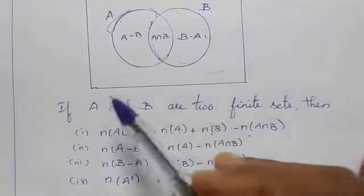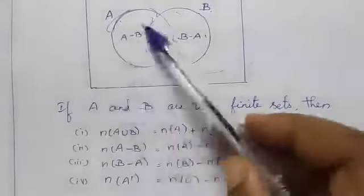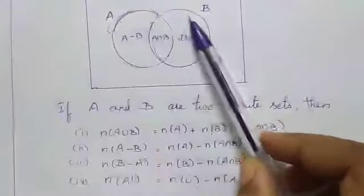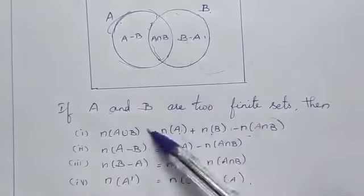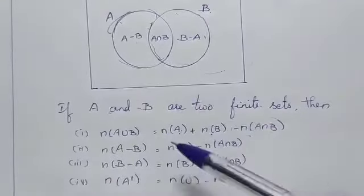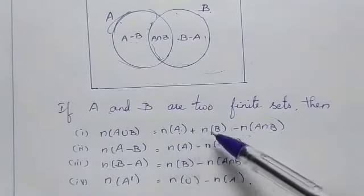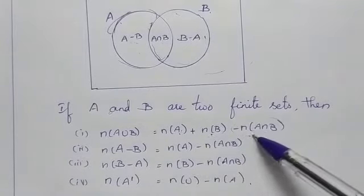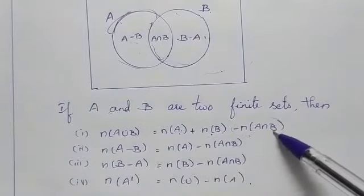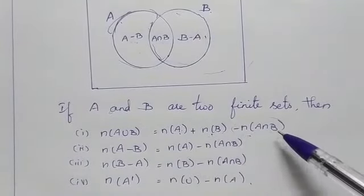Therefore, N of A union B is equal to N of A plus N of B minus N of A intersection B. If you want to find N of A intersection B, rearrange: N of A intersection B equals N of A plus N of B minus N of A union B.